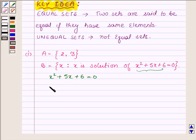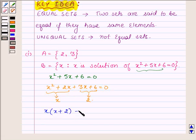Now by splitting the middle term, this can be written as x² + 2x + 3x + 6 = 0. Taking x common from the first two terms and 3 common from the last two terms, it can be written as x(x + 2) + 3(x + 2) = 0.